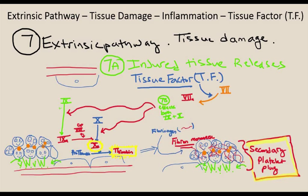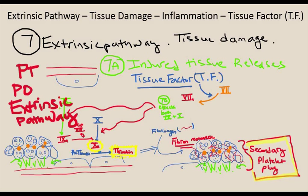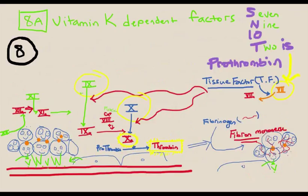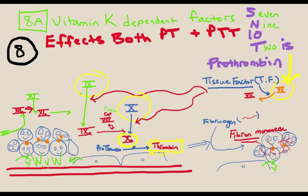For the extrinsic pathway, we talk about PT. Joe associates this with PO, anything taken by mouth. Aspirin is excluded, but we commonly discuss coumadin or warfarin. Then we have vitamin K-dependent factors. An easy way to remember is SNOT: 7, 9, O stands for 10, and T for 2. Factor 2 is also called prothrombin. When someone is vitamin K deficient, they cannot form these factors efficiently. This affects both PT and PTT.